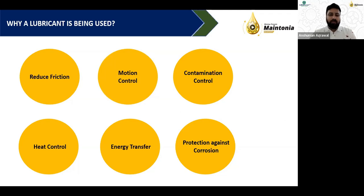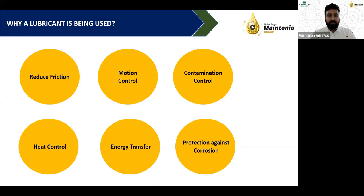Motion control is used in hydraulic systems where multiple types of motion are required — translatory, reciprocatory, or rotary. Examples include reciprocation in a piston-cylinder, valve actuation, rotary actuation in wagon tippler applications using hydraulic motors, and clamping operations in hydraulic systems.